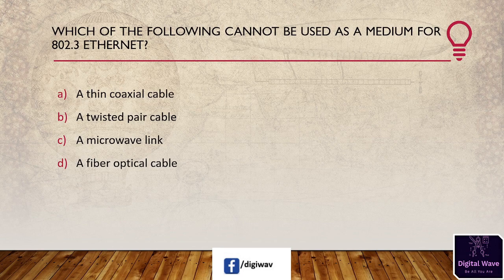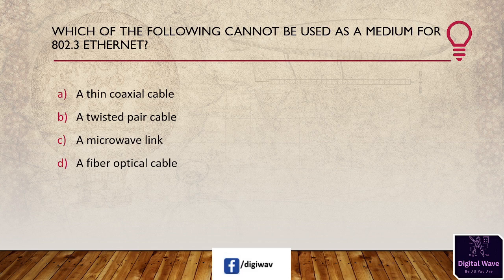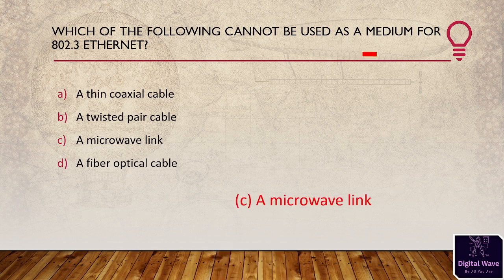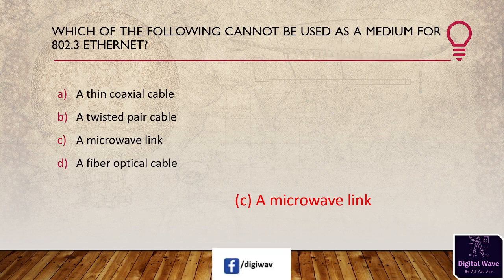Next question: which of the following cannot be used as a medium for 802.3 Ethernet? Options are: thin coaxial cable, twisted pair cable, microwave link, and fiber optical cable. The answer is microwave link — a microwave link cannot be used as a medium for 802.3 Ethernet because it is a transmission network that utilizes a beam of radio waves in the microwave frequency spectrum to relay video, audio, or data between two places.